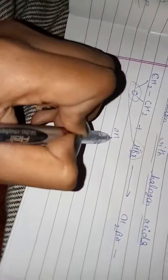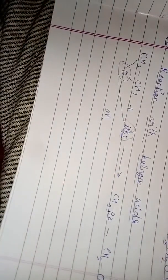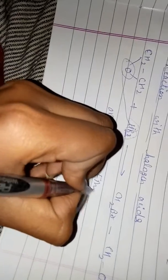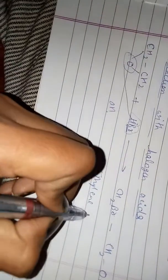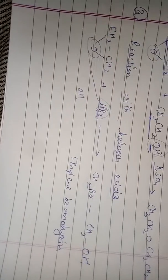With HBr, the Br will go to one of the CH₂ carbons, and hydrogen remains, and from the oxygen side we get OH. So this is ethylene bromohydrin. This is the reaction with halogen acids to give bromohydrin.